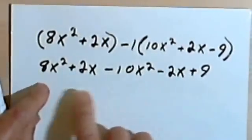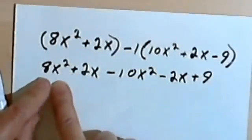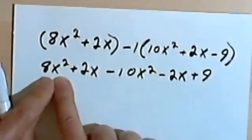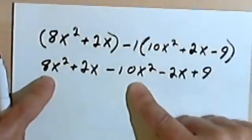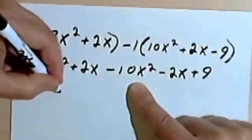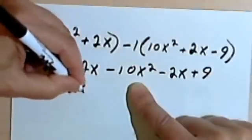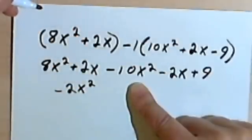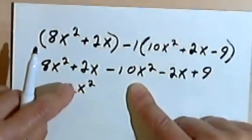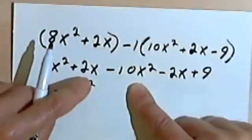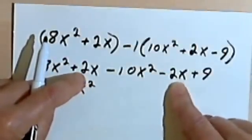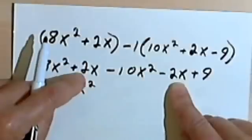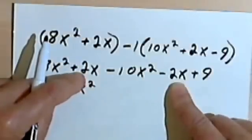So starting with the highest level exponent, my 2, my x², I've got 8x² and a -10x². So 8 and -10 is going to be -2x². My next exponent is just going to be the x's, x to the first power, so I've got a positive 2x and a -2x. Well, positive 2 minus 2 is 0, so there's nothing to say there. They cancel each other out.